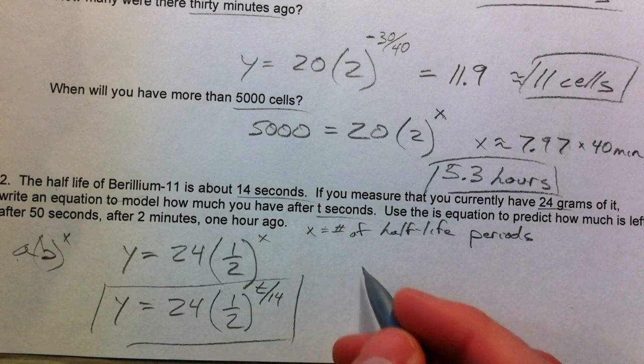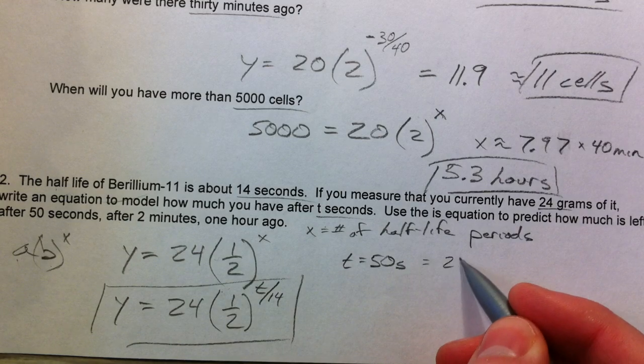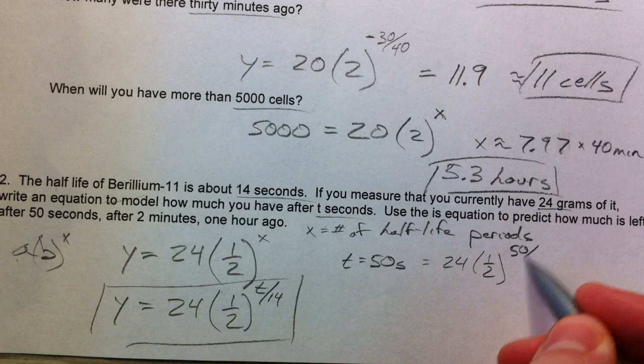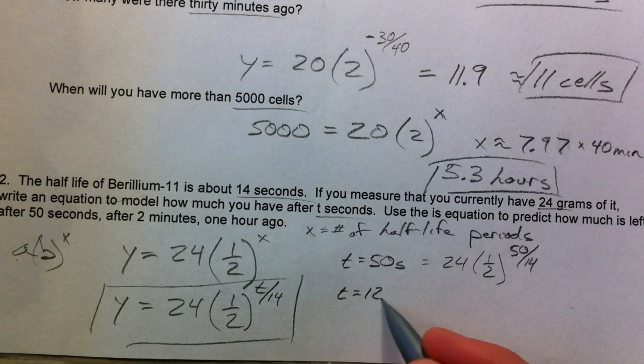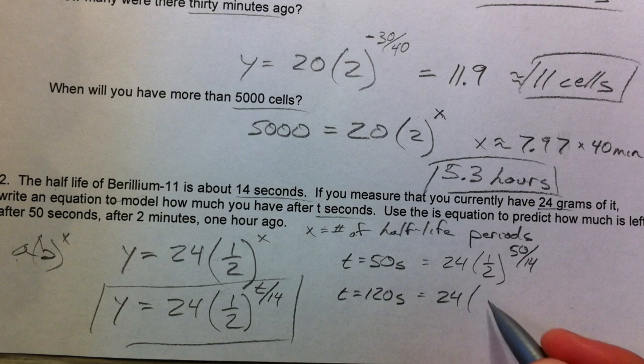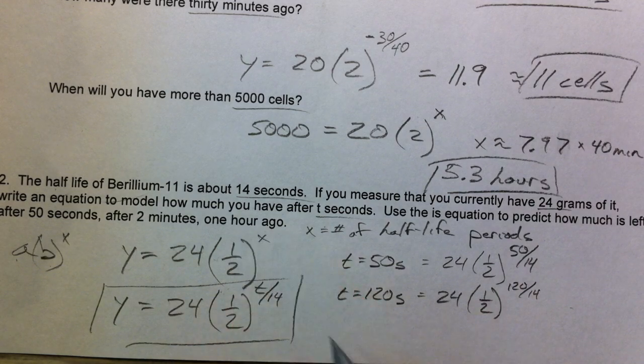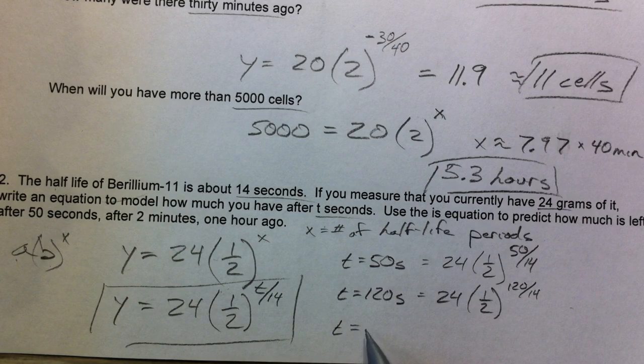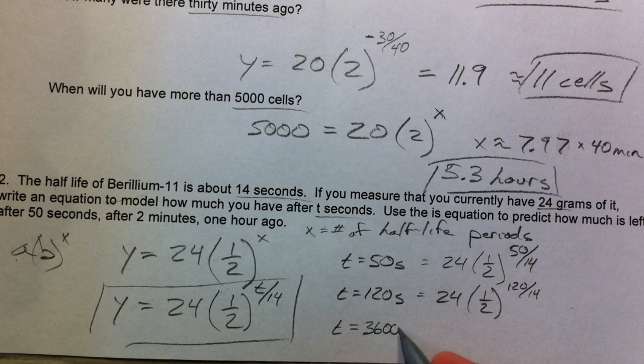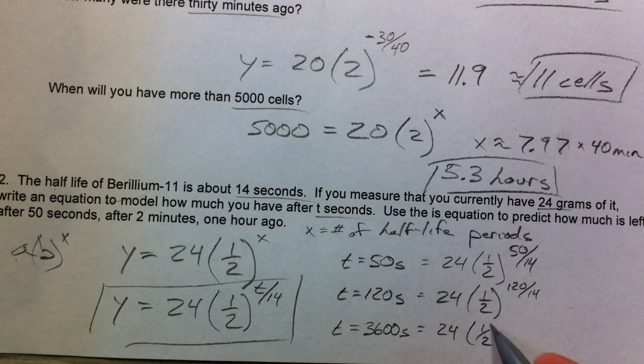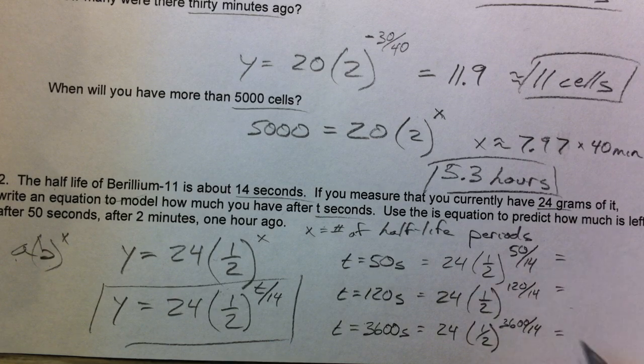We want to know how much is left after 50 seconds. That's 24 times 1/2 raised to the 50 over 14. And then after two minutes, that's t equals 120 seconds, so 24 times 1/2 to the 120 divided by 14. And one hour ago, that's going to be 60 minutes times 60 seconds per minute, so that's 3600 seconds. So that's 24 times 1/2 raised to the 3600 divided by 14. We could figure out how much is left after each one of those times.